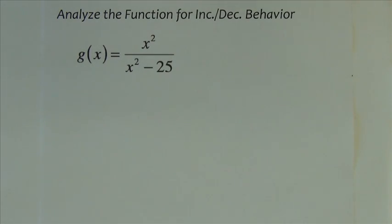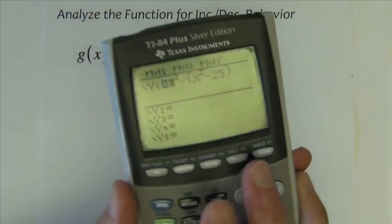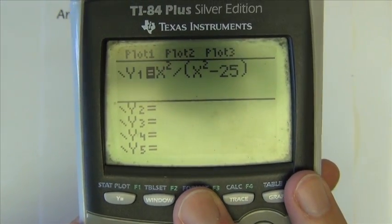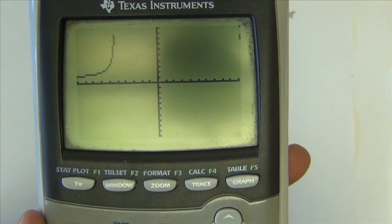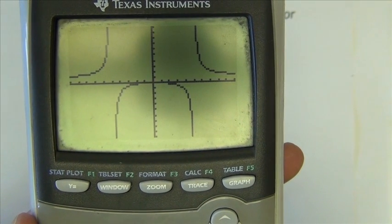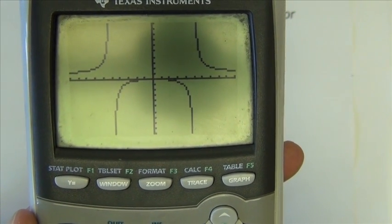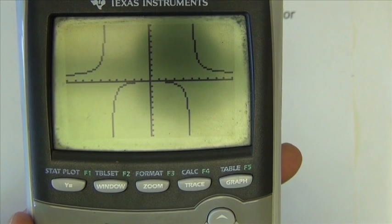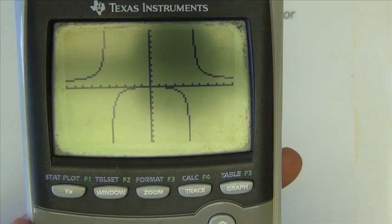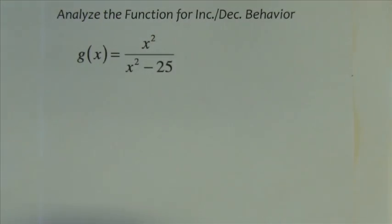This next example asks us to analyze the function for increasing, decreasing behavior. So we're going to be able to do all that just by looking at graphs. I begin by typing in my function, x squared divided by x squared minus 25, and I graph it, zoom standard. The graph looks like this. Let me do a rough sketch of this graph on paper and then we'll talk about the increasing, decreasing nature of it. Just real quick, real rough sketch on paper.